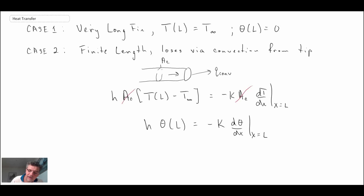Case 3 is another one that's a little bit of an idealization. That would be the case where instead of having free convection at the tip, you put insulation there, and so there is no heat transfer from the tip.